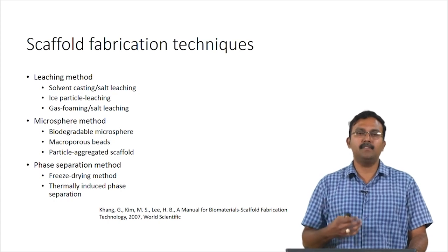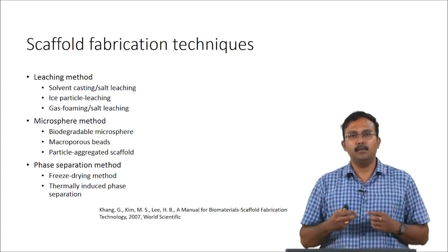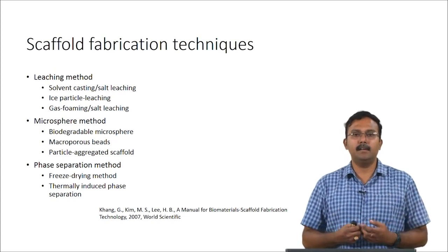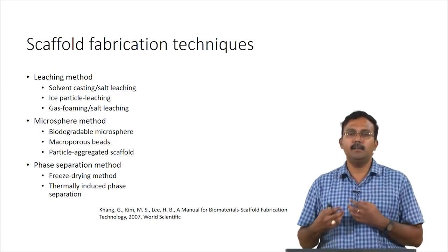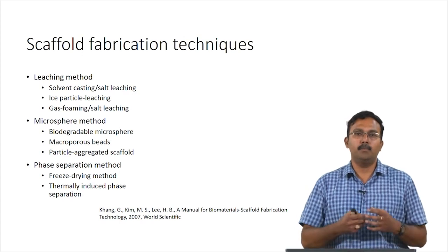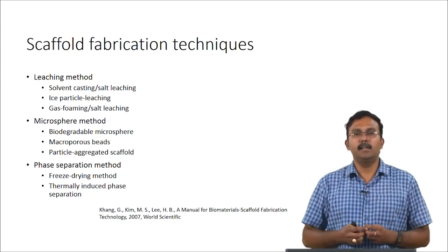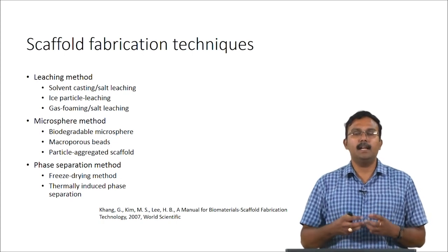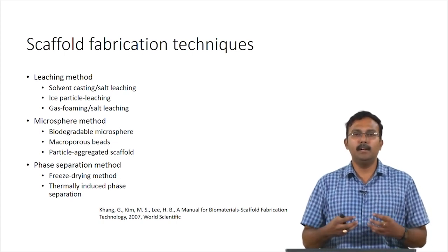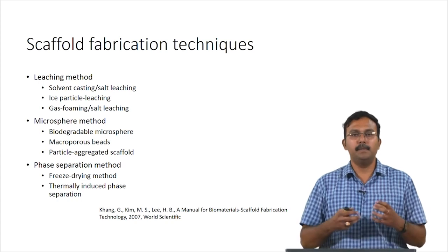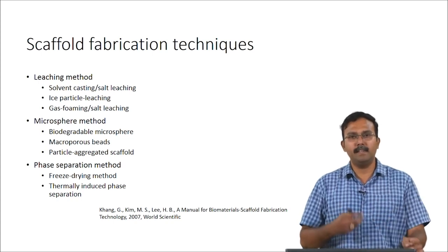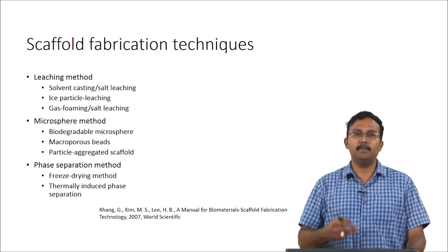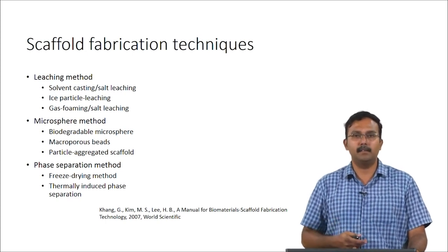The next strategy is called the phase separation strategy. There are two techniques: one is the freeze drying method and there is also a thermally induced phase separation method. By creating a phase separation you can actually create porous structures, and this will also provide good interconnected pores. We will see more about the freeze drying method and see how exactly the scaffolds would look like and what is the principle behind it.